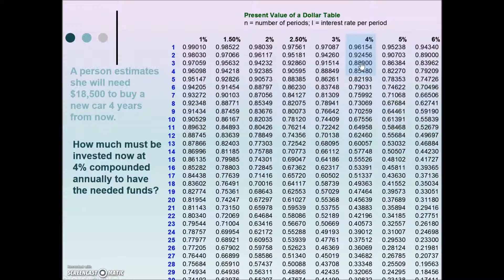We need to further calculate our n, the number of compounding periods. The frequency is annually, so that's once per year for 4 years, gives us an n of 4. So we're looking for where that row intersects the 4%, and here we have our multiplier.